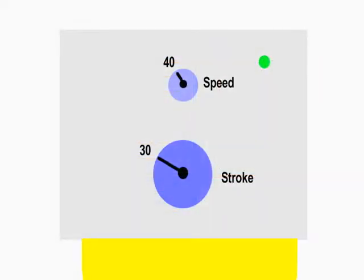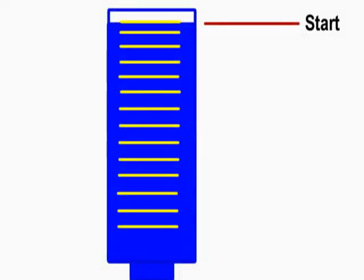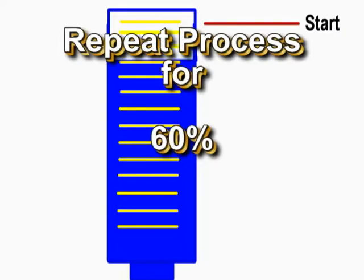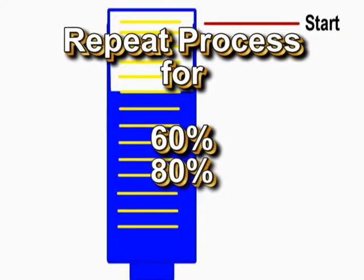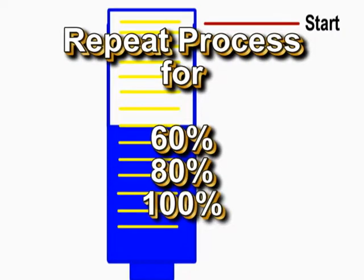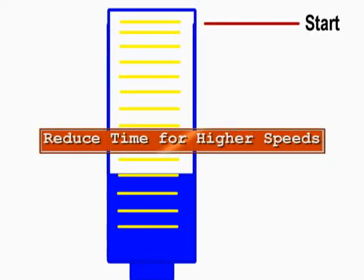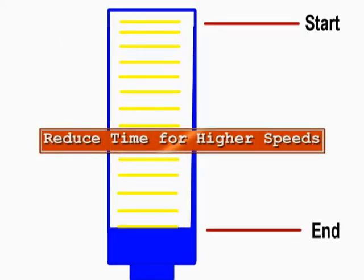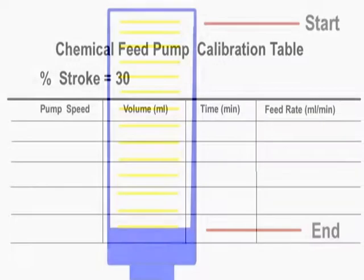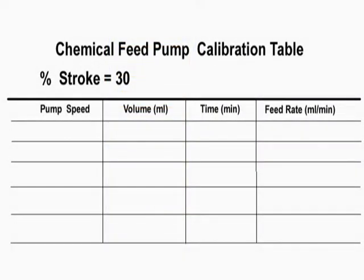Next, set the pump speed to 40 while keeping the stroke at 30 percent, refill the calibration tube, and time for two minutes. The process should be repeated for 60, 80, and 100 percent speeds. The time can be reduced to one minute for the higher speed settings. The results should be recorded on a table.